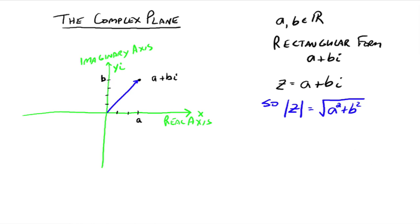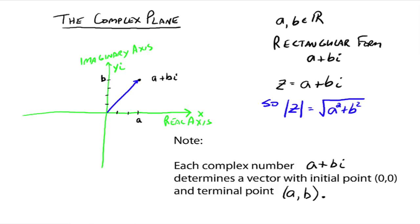Now, a little note then. Each complex number, a plus bi, does determine a vector, with the initial point at the origin and the terminal point at a plus bi. So no matter where you plot a complex number, that determines a vector.